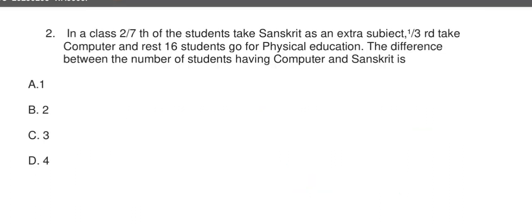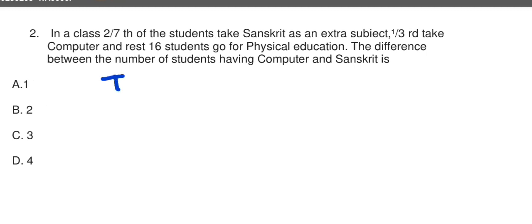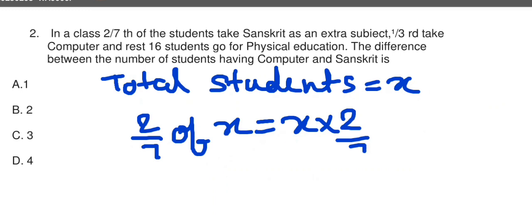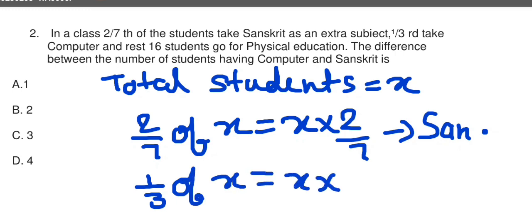In a class, 2 by 7th of the students take Sanskrit. Suppose, how many students are there? Total students is equal to X. Now, in a class, 2 by 7th of the students take Sanskrit as an extra subject, means that 2 by 7 of X is equal to X into 2 by 7, goes to Sanskrit. Now, one by 3rd take Computer, means one by 3rd of X, means X into 1 by 3 take Computer.